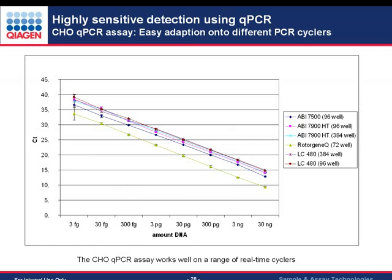We evaluated the assay on different cyclers: the ABI 7500 in 96-well format, the ABI 7900 in both 96-well and 384-well, the Rotor-Gene instrument, and the LightCycler 480 in 96- and 384-well formats. All cyclers produced very nice parallel curves with no major differences, enabling easy transfer of the assay between instruments. Notably, the lowest CTs were achieved with the Rotor-Gene in this example.